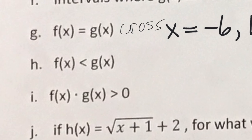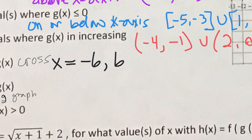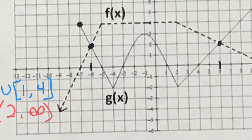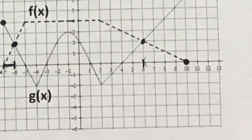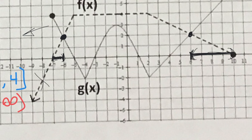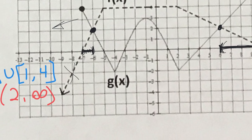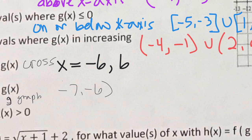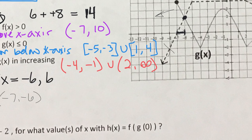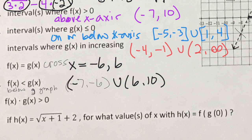For where f(x) is less than g(x), we find where the f graph — the dashed line — is below the g graph — the solid line. Since g doesn't exist to the left of negative 7, no comparison exists there. F is below g from negative 7 to negative 6, and again from 6 to 10. Those are two intervals using parentheses unless the problem specifies equal to.